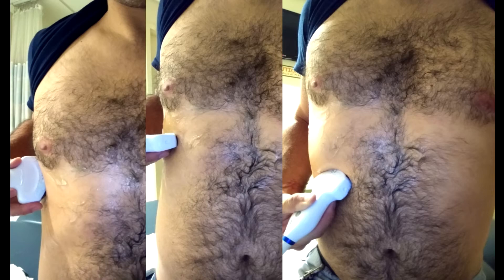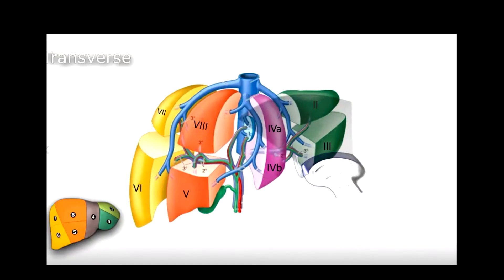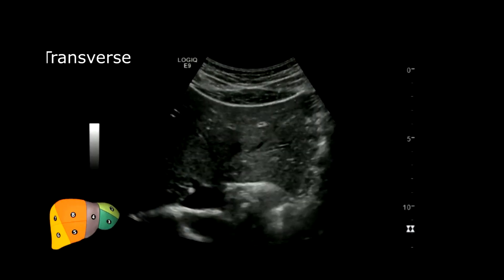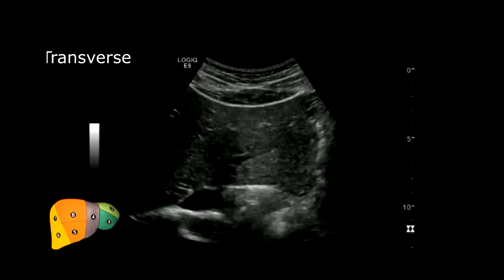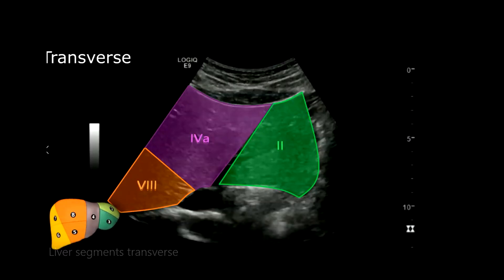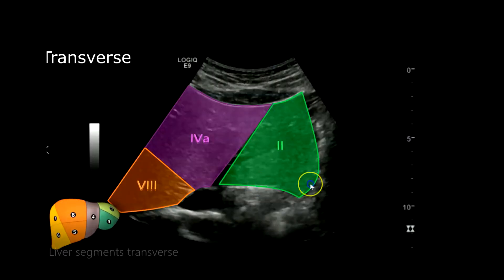In transverse, this is the superior segment of the liver — segment 2 at the top. Scanning in the superior region you'll see segments 2, 4a, and 8, so we're scanning around that superior region. Segment 2 is lateral left, 4a is medial left, and 8 is right anterior superior.